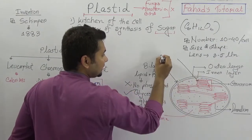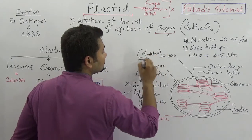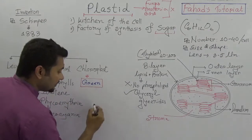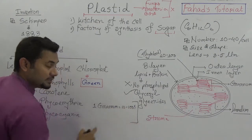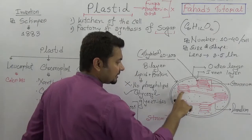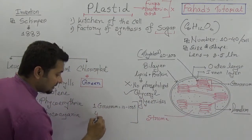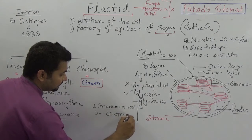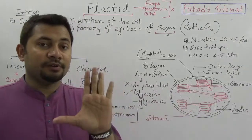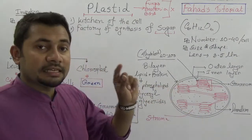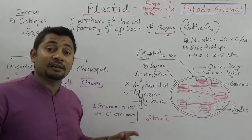In a chloroplast, one granum consists of 10 to 100 thylakoids. In a plastid there will be like 40 to 60, or even up to 80, grana. So in the diagram drawn, there are 5 grana shown, but in one granum there can be 10 to 100 thylakoids, and a plastid can have 40 to 60 grana in total.